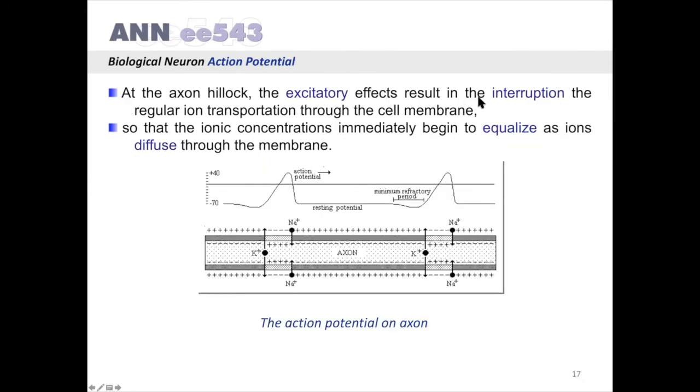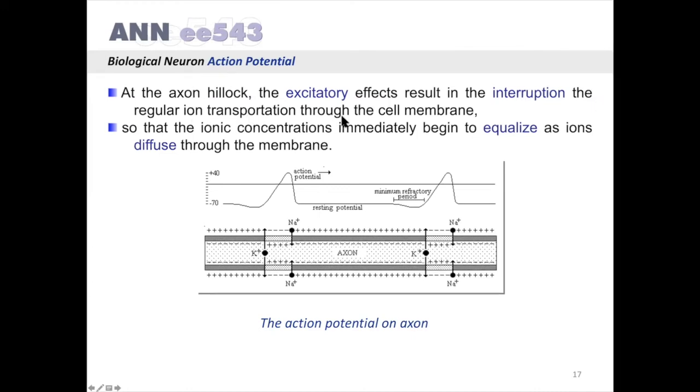In the axon hillock, the excitatory effects result in the interruption of the regular ion transportation through the cell membrane, so that ionic concentrations immediately begin to equalize as ions diffuse through the membrane.